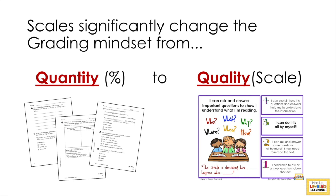Level one students need a lot of extra support. Level four students could probably teach the class — they have an in-depth understanding and can analyze which questions are best for understanding the story or answering specific questions asked of them. So each level of your scale shows a different quality of understanding.